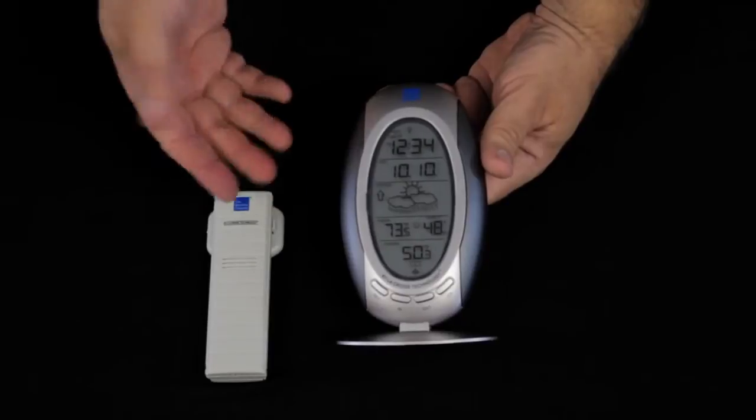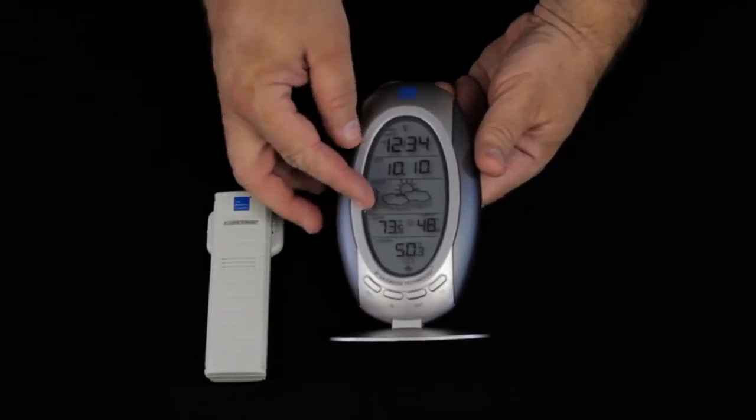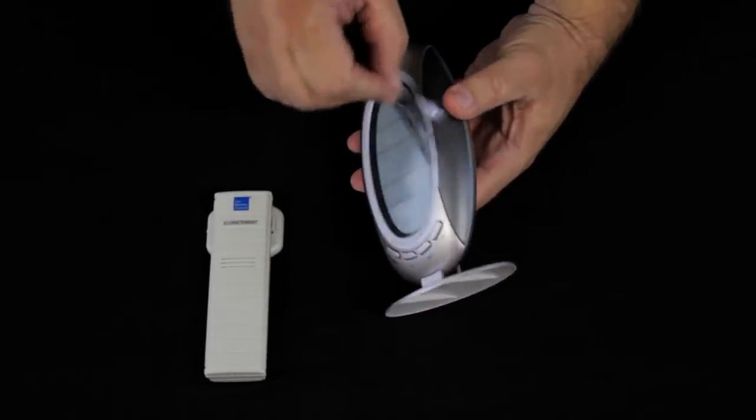When you open the package, you'll find the sensor, the display unit, and you want to remove the protective surface coating from the display unit.